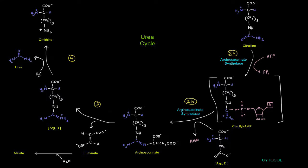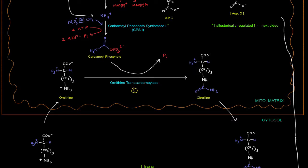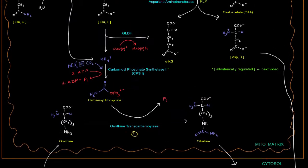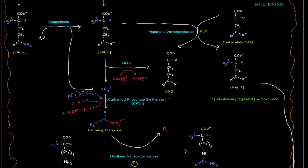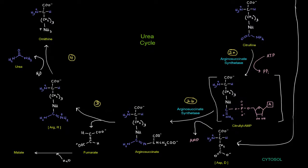Well, it came from the aspartate that we created back in the mitochondrial matrix up here. Right there via that transamination reaction. That aspartate is going to come out into the cytosol to be a part of this reaction. Okay. So it's going to replace the AMP. The AMP will fall off and will produce arginosuccinate.